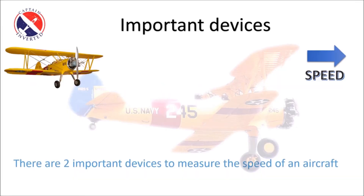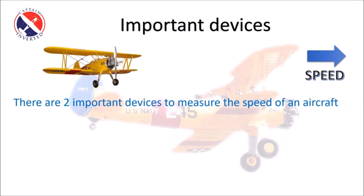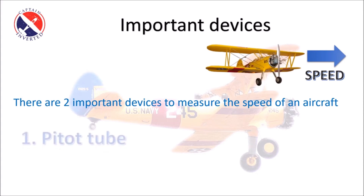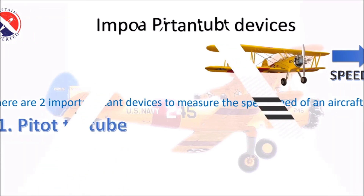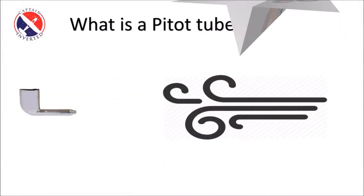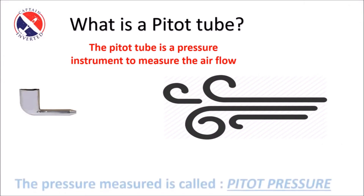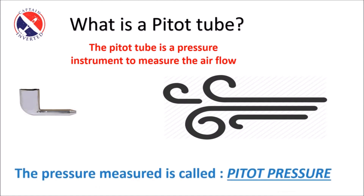There are two important devices to measure the speed of an aircraft. The first is the pitot tube. The second is the static port, which is a pressure instrument used to measure the air flow.